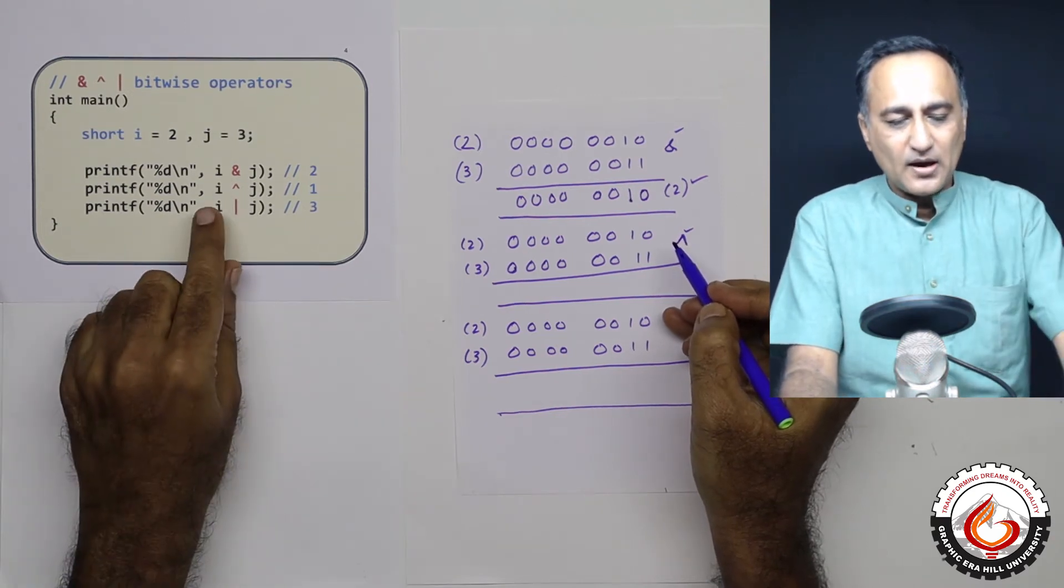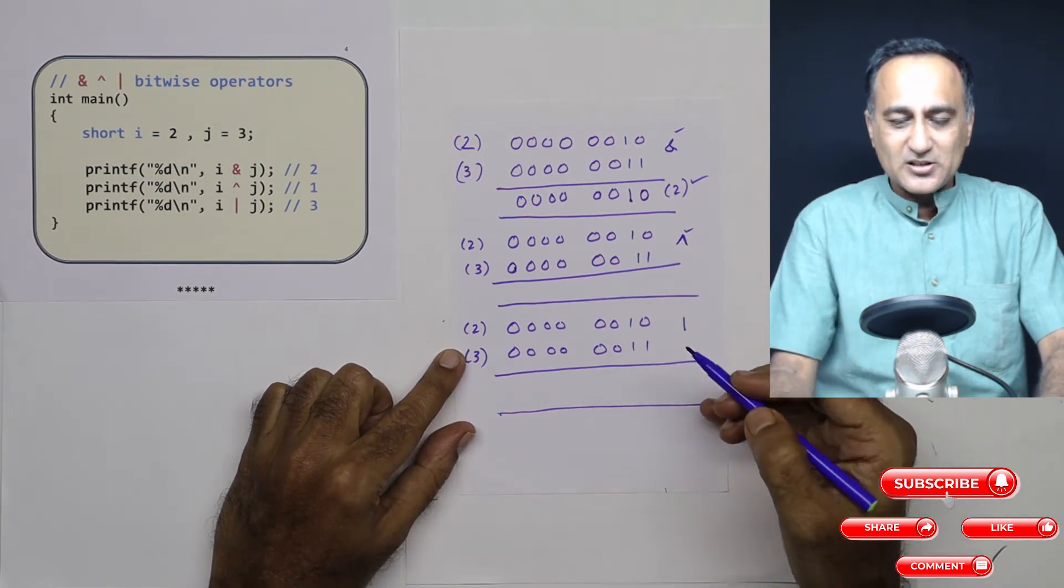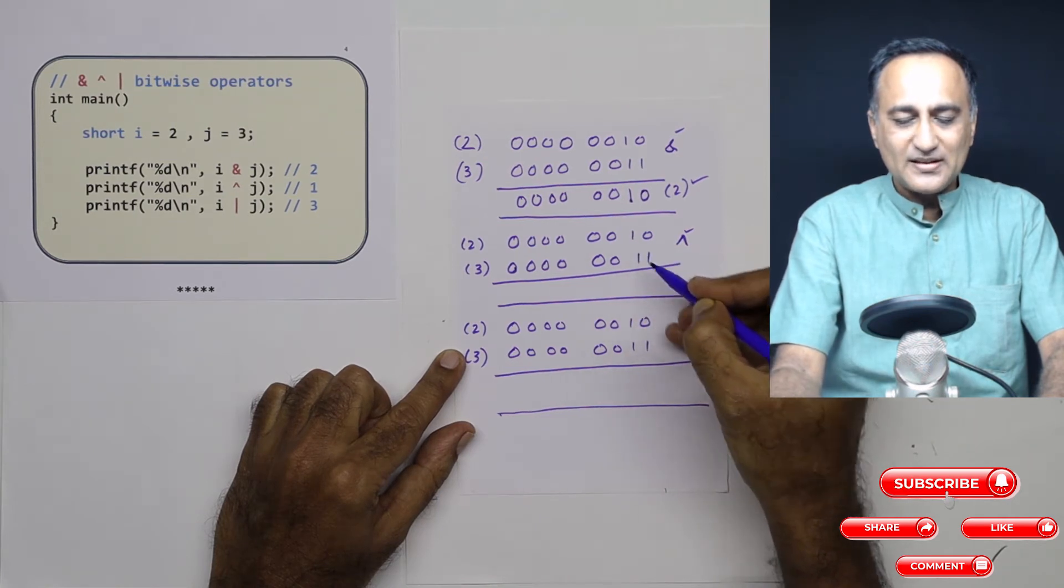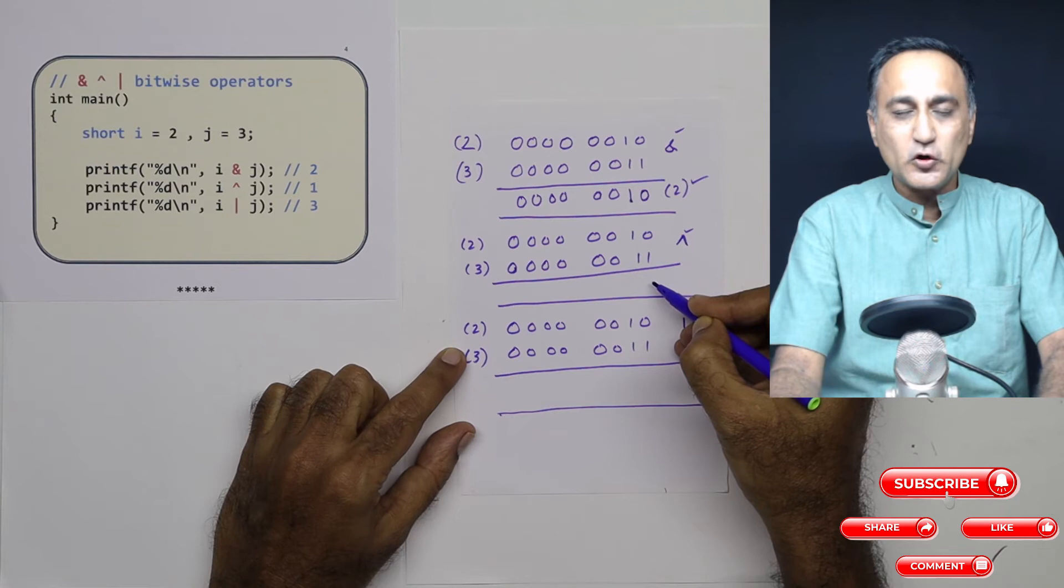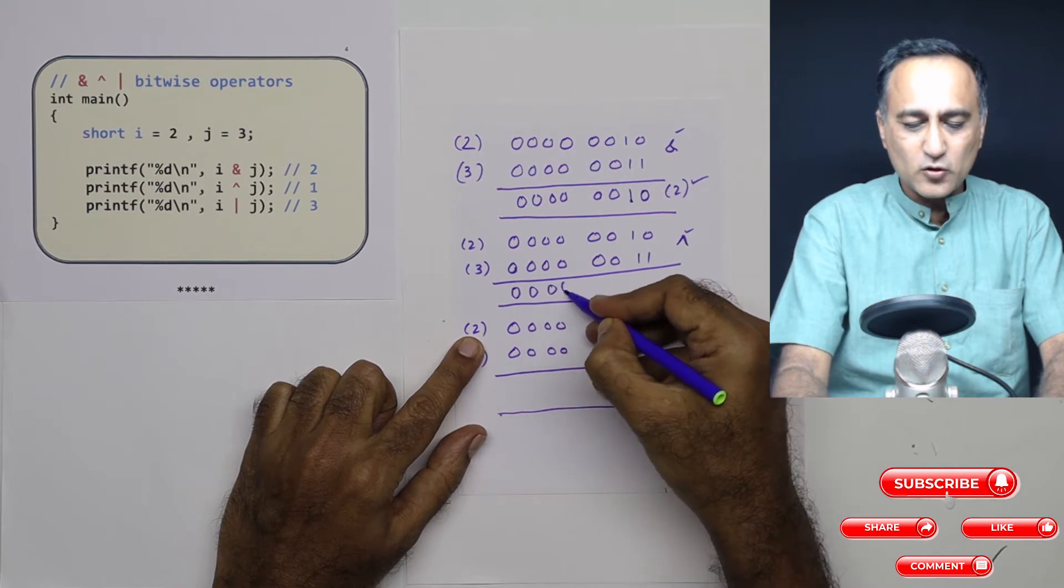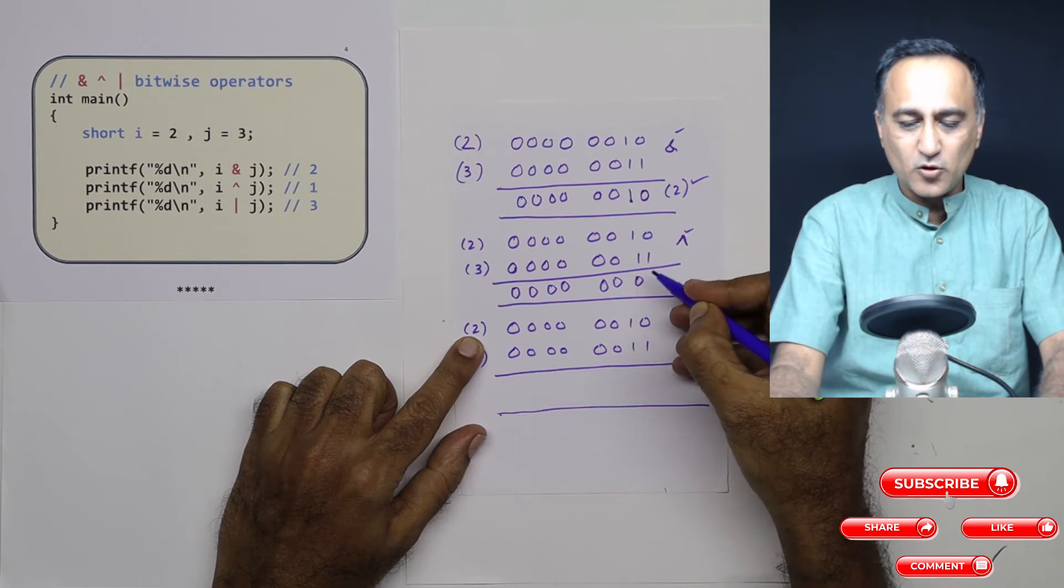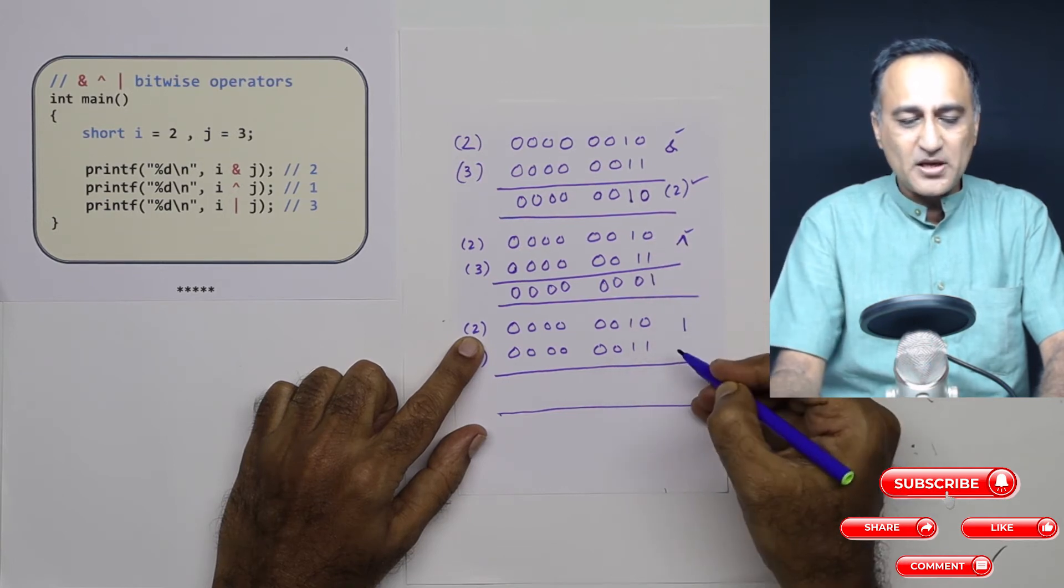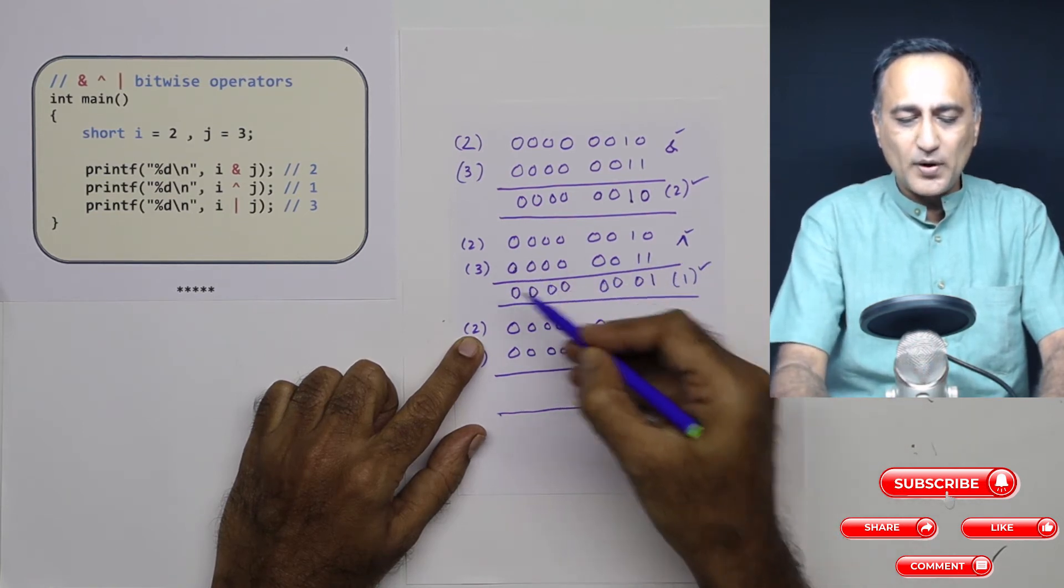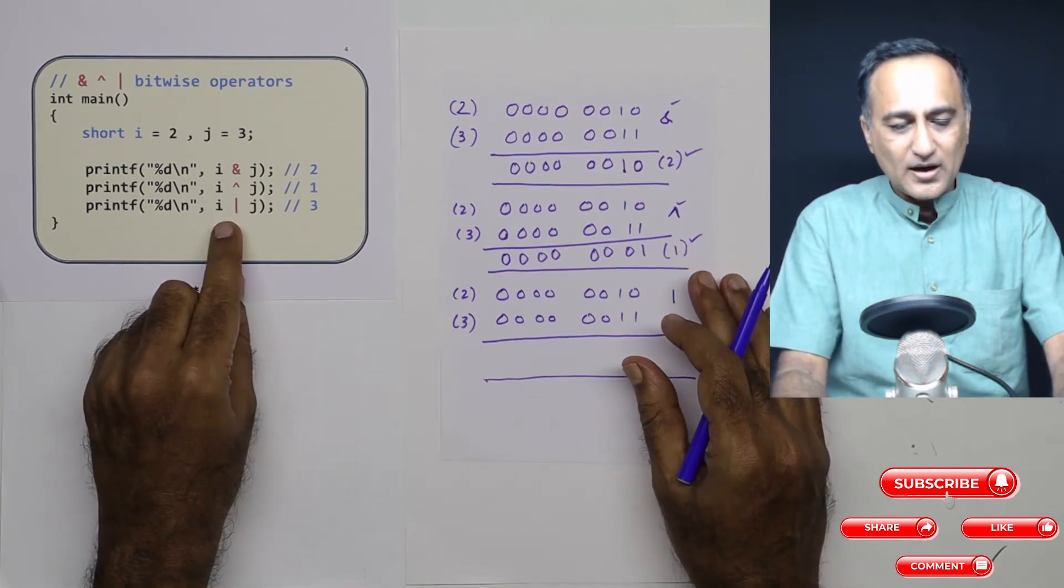Now let's do i XOR j. XOR means as long as each of the bits is not 00 or 11, then the resulting bit is going to be 1. If both of them are same, the answer is going to be 0. But if the two bits are opposite, then only it's going to be 1. The answer is 1. So if you XOR 2 and 3, you're going to get 1 as the answer.